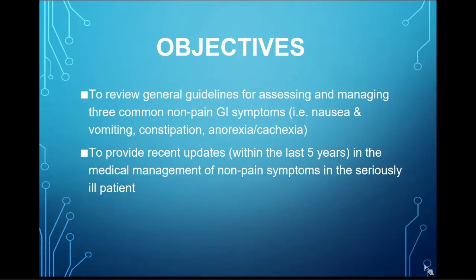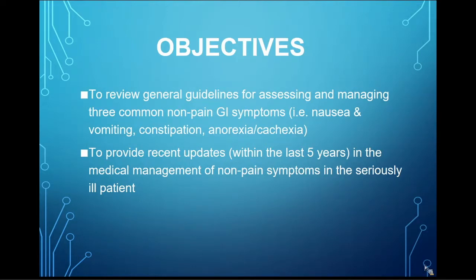I wanted to highlight general guidelines for assessing and managing three common non-pain symptoms. If I had more time I would discuss more, but I thought these are among the most common ones. I grouped them into GI: nausea, vomiting, constipation, and then anorexia and cachexia — a good refresher course on basic assessment and management, plus recent updates within the last five years on medical management of non-pain symptoms in seriously ill patients with chronic progressive serious illness, both cancer and non-cancer.